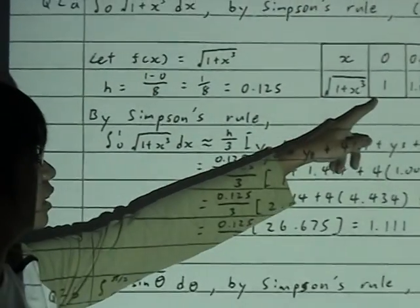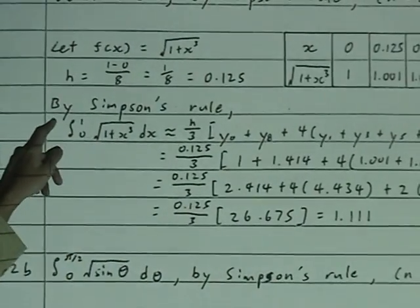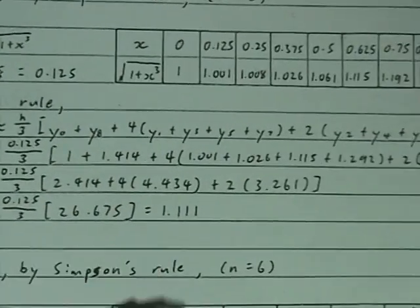You use all of that derived table, you substitute that inside the Simpson's rule, and then you will derive this answer 1.111.